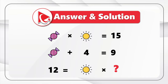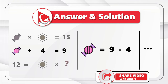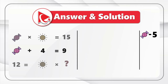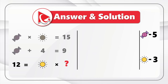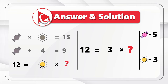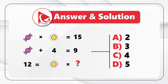Starting with the middle expression, candy + 4 = 9, so candy = 9 − 4 = 5. Knowing candy equals 5, we focus on the top expression: 5 × sun = 15, so sun = 3. Now focusing on the last expression: 12 = 3 × ?, so ? = 12 ÷ 3 = 4. The end result is answer C, 4.